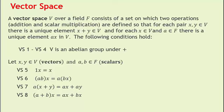Now we define a vector space. A vector space V over a field F consists of a set on which two operations are defined: addition in V, and scalar multiplication — that's when you multiply elements of F to vectors in V. These two operations are defined so that for each pair x, y in V there is a unique element x plus y in V, meaning addition is a binary operation on V. And for each x in V and a in F, those are the scalars, there is a unique element ax in V.